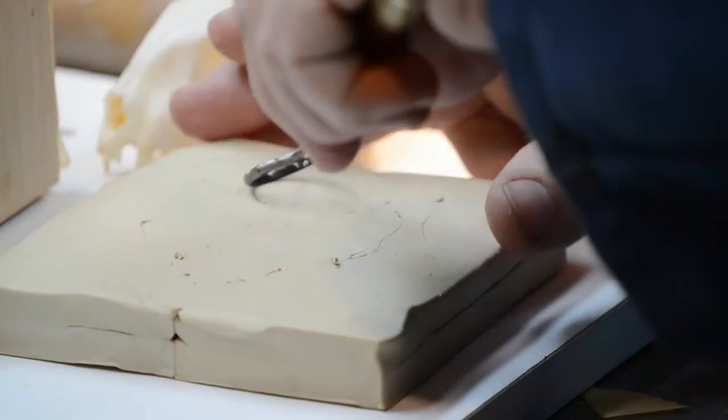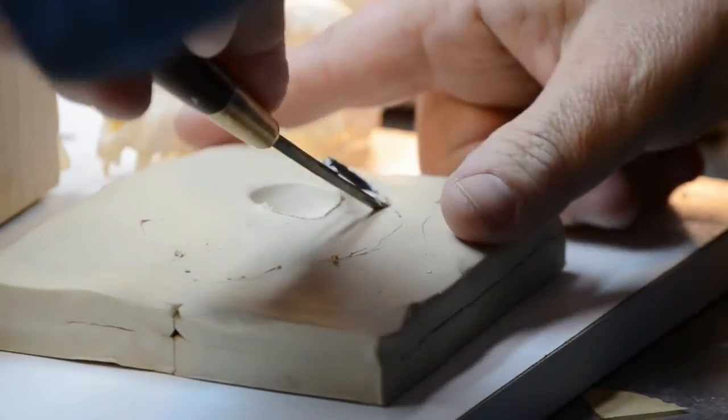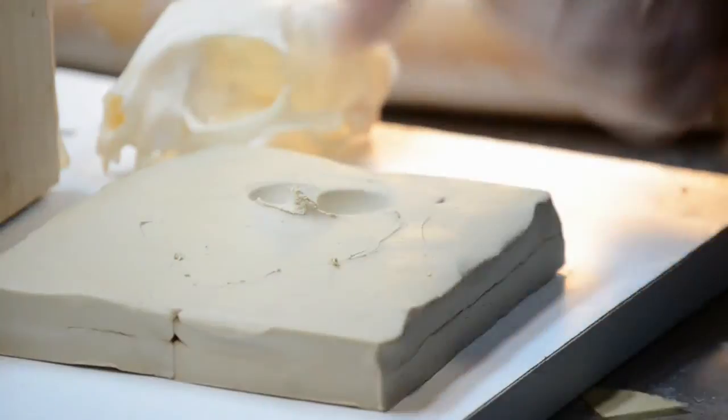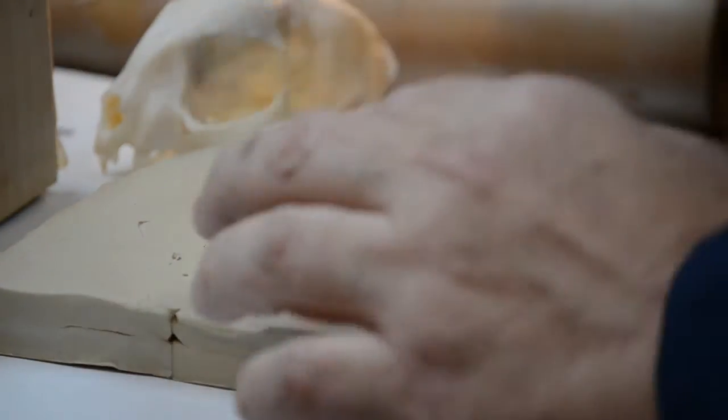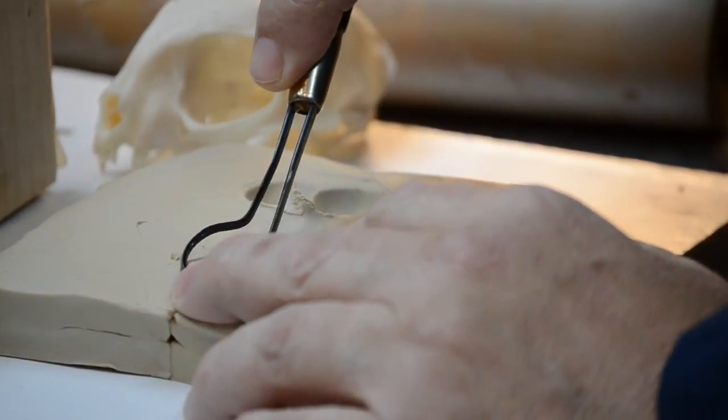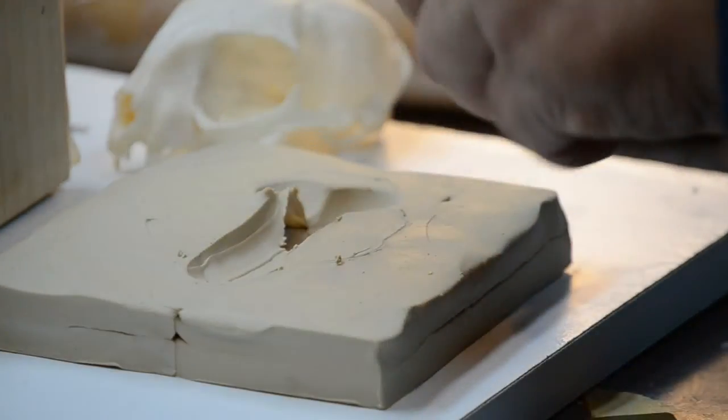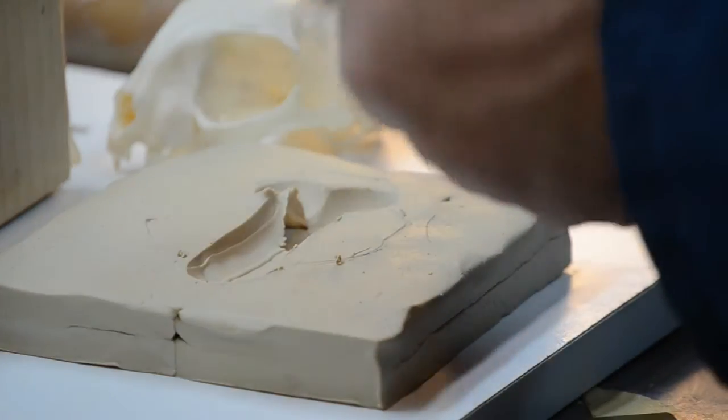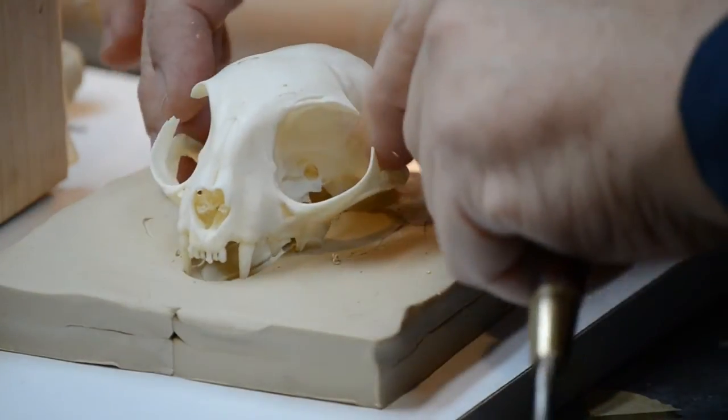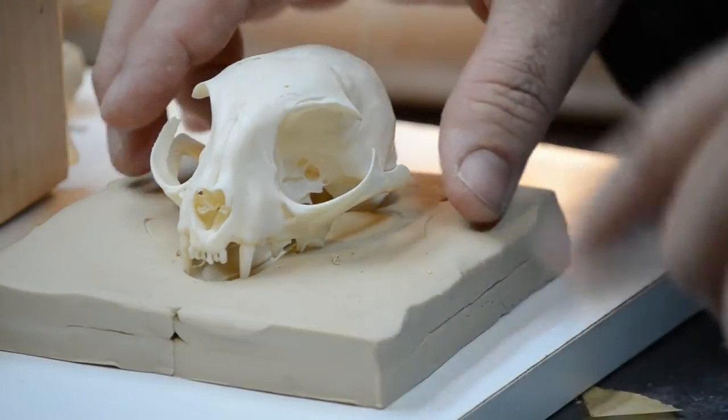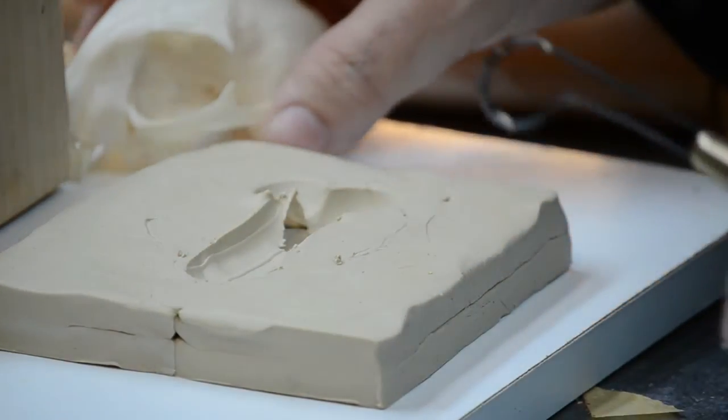We want the underside of the skull to sit deep in the clay, so we take out chunks, paying close attention to the nose area and the center of the skull. We don't need to empty out under the eye sockets, the zygomatic arch. The eye sockets don't need to be emptied out as much.